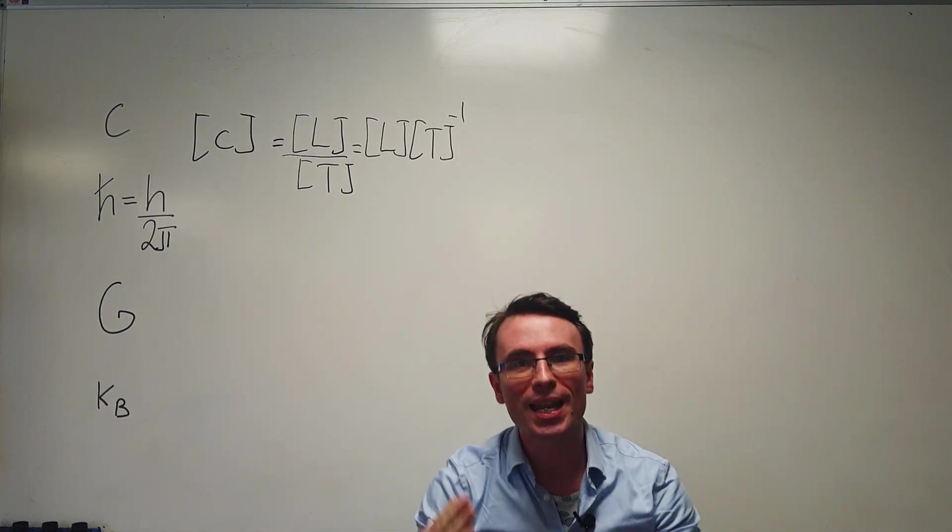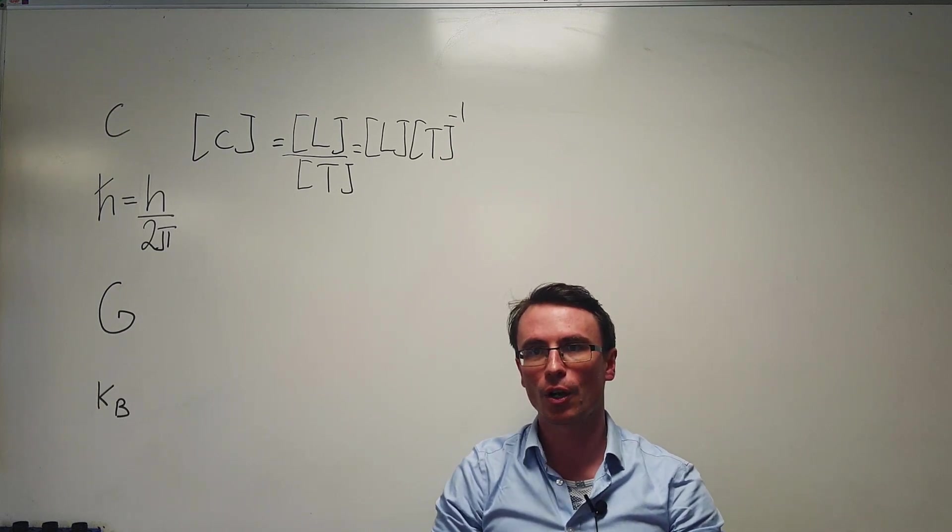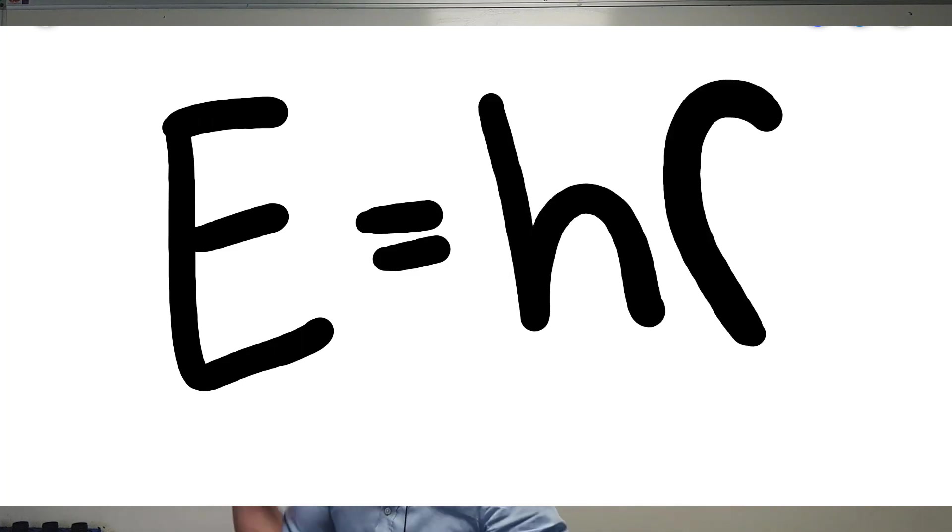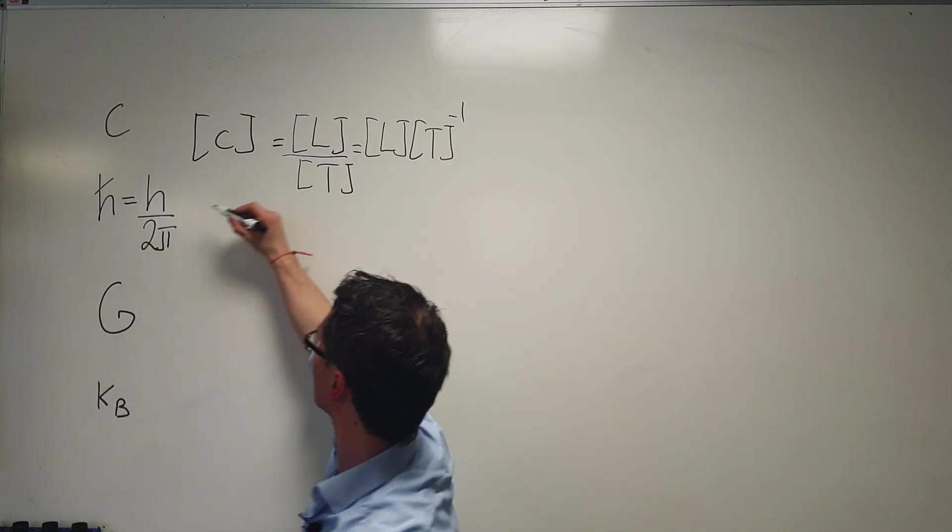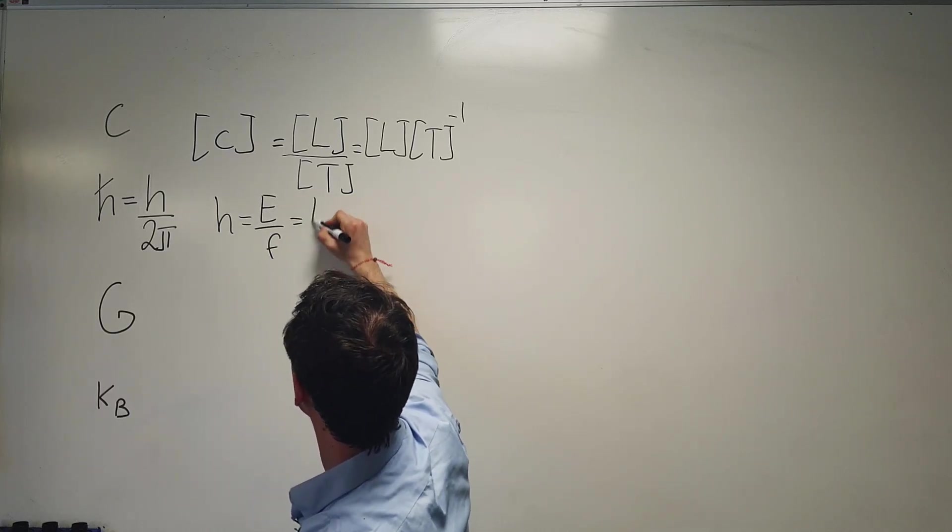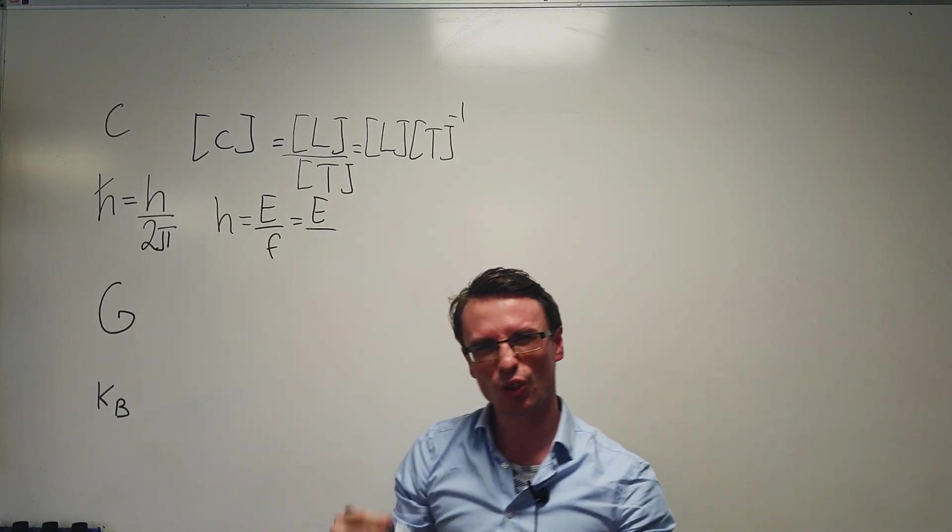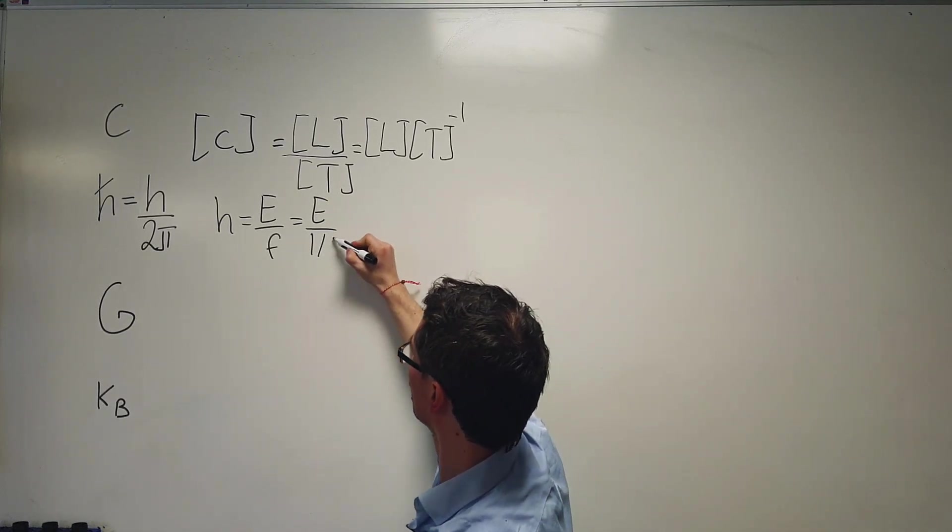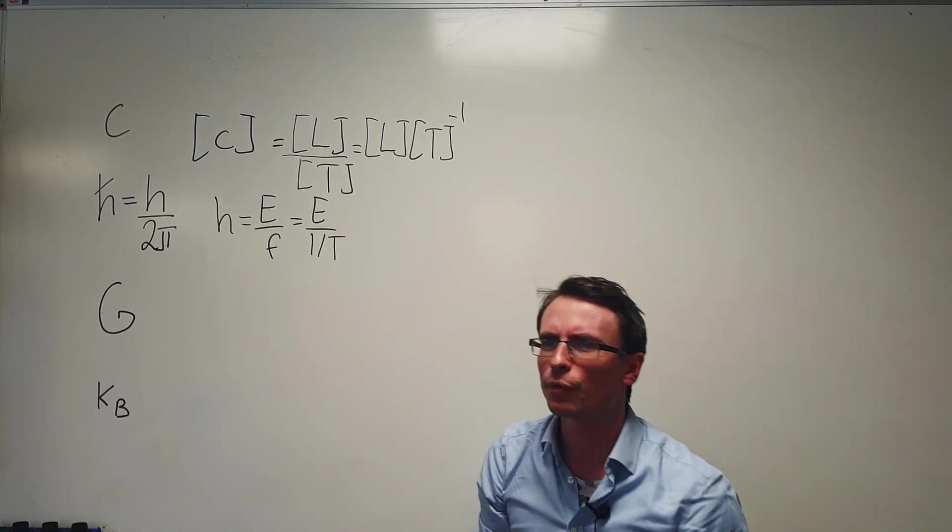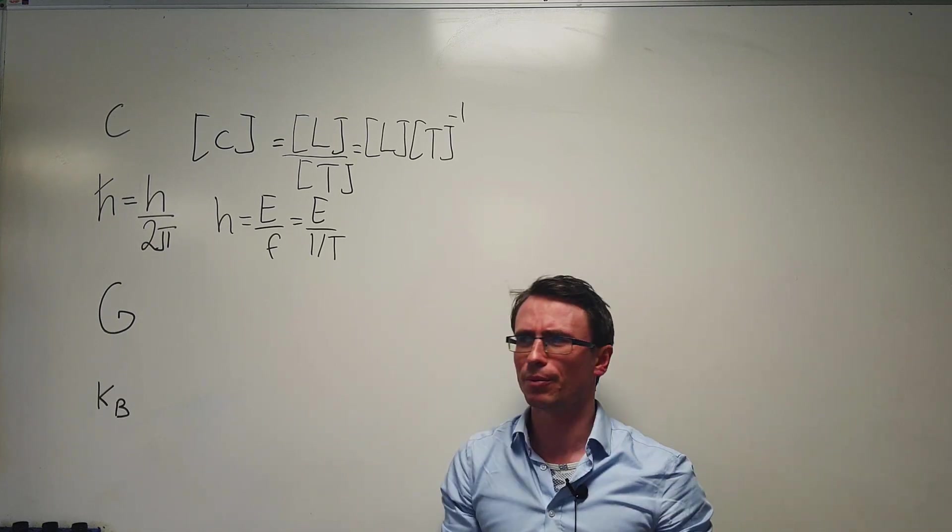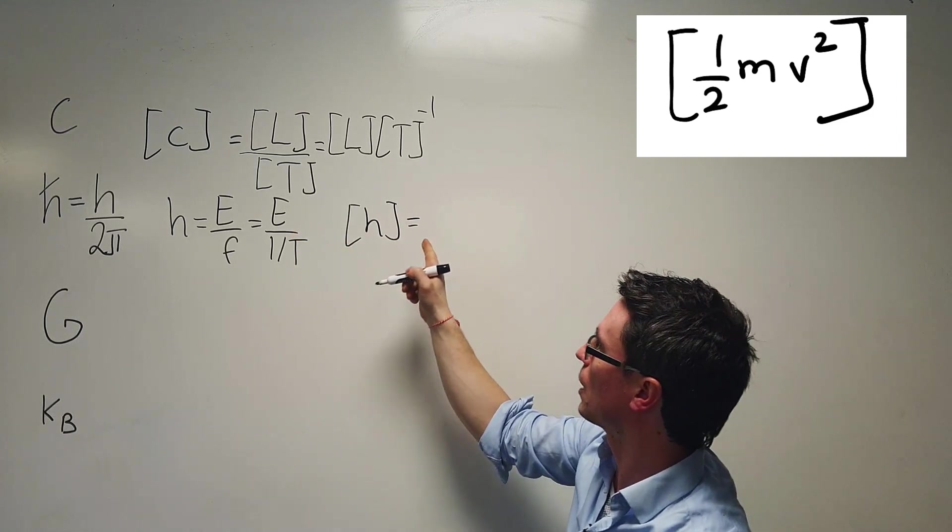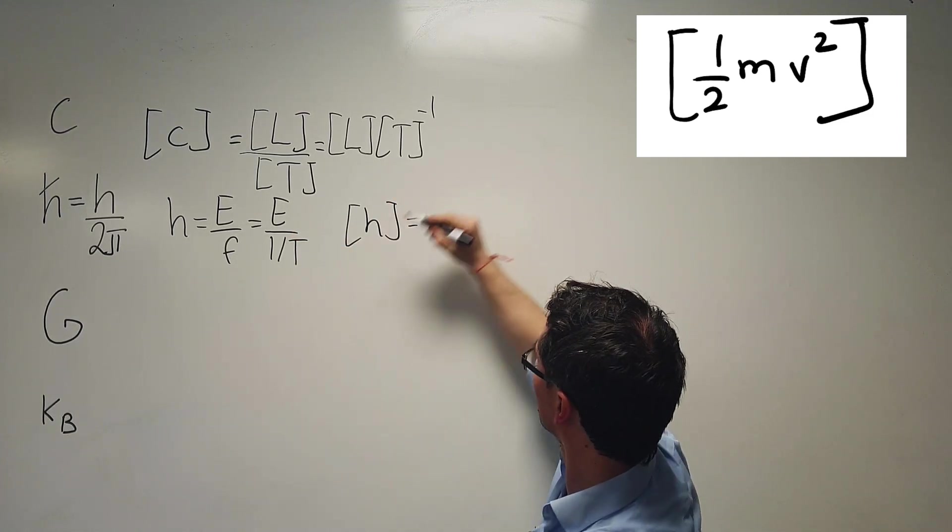To find the dimensions of Planck's constant, we can just use the E equals HF equation and we can just rearrange that for Planck's constant, which is just E over the frequency. Now frequency is just one over the time period. So we can just write this down as one over the time period. We can find the dimensions of energy from any formula for energy, for instance, even a half mv squared. Let's write this down.